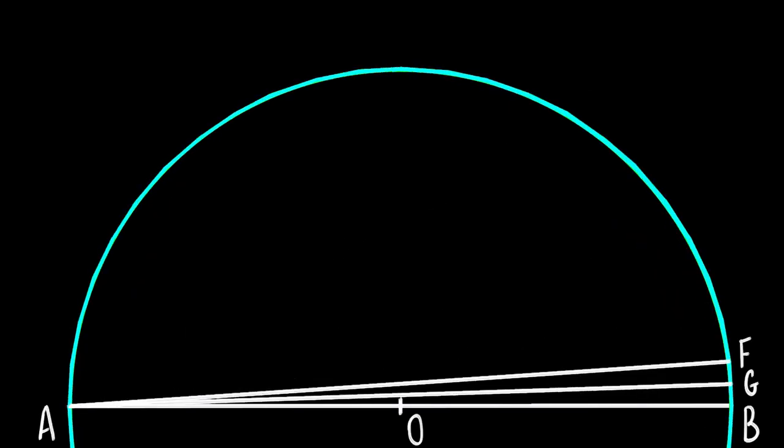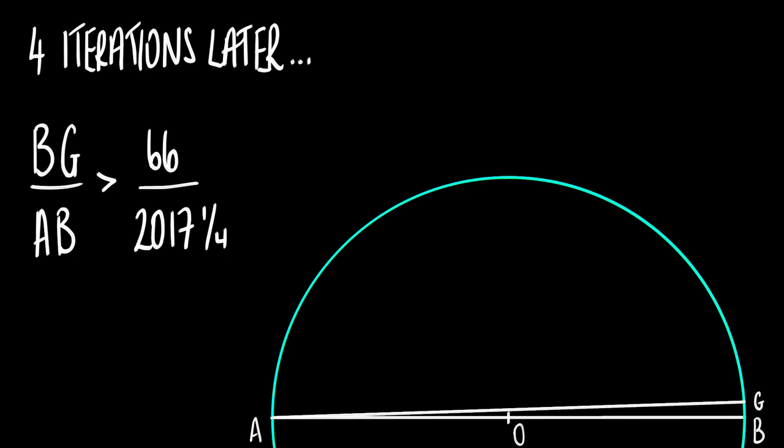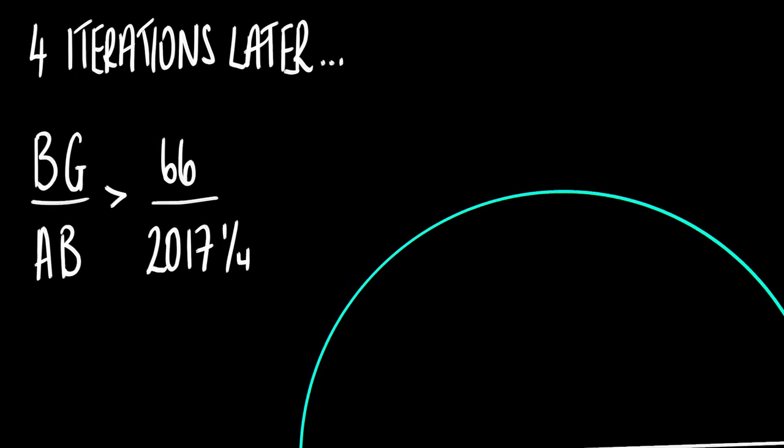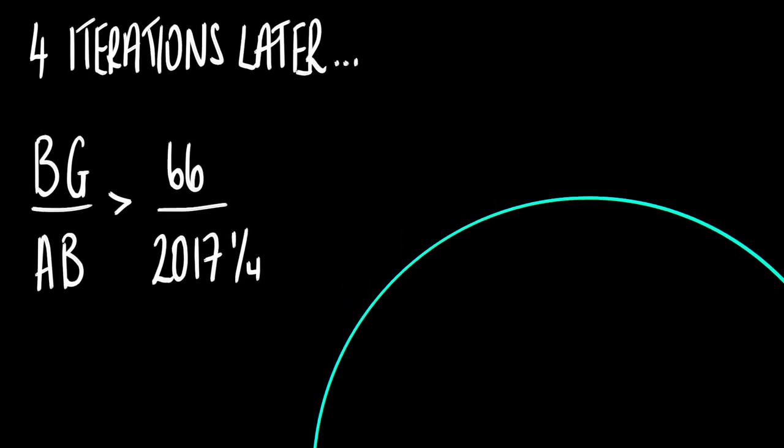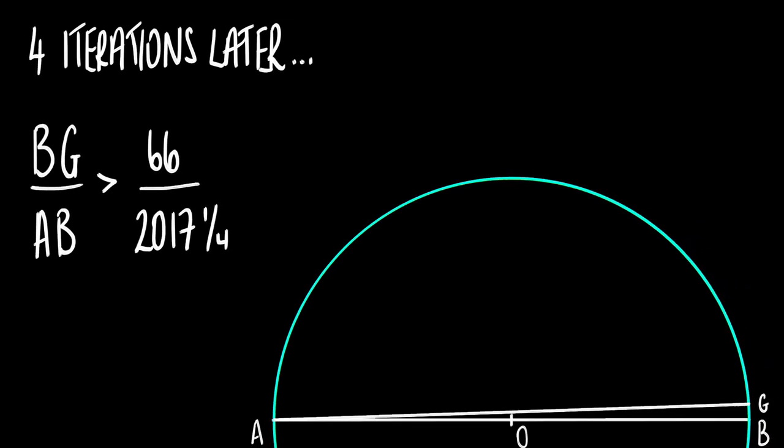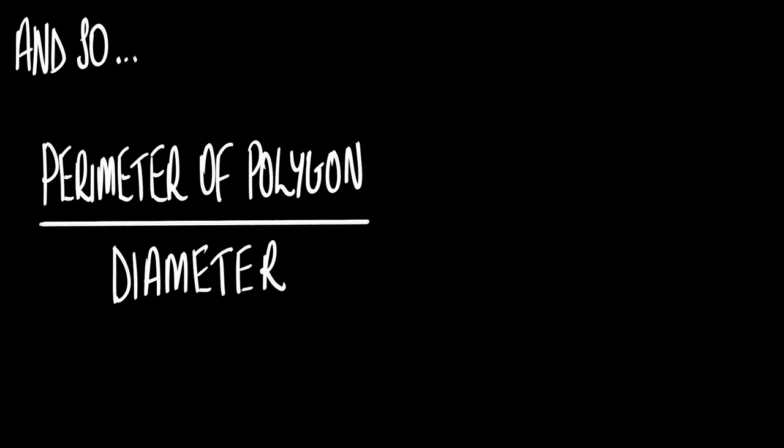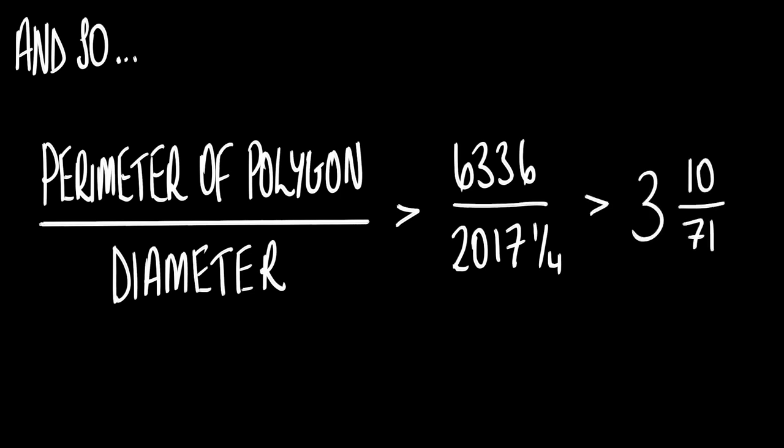Archimedes did this four times, revealing that the ratio of BG to AB is greater than 66 to 2,017 and a quarter, and the angle BAG is 1 24th of a right angle, making BG one side of a 96-sided polygon. Following from that then, we see that the ratio of the perimeter of the polygon to the diameter of the circle is greater than the ratio of 6,336 to 2,017 and a quarter, which Archimedes safely approximates to be greater than 3 and 10/71.